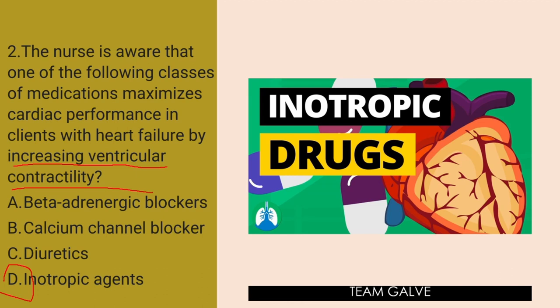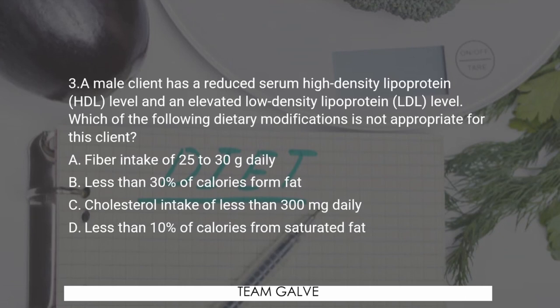Board exam question number three. A male client has a reduced serum high-density lipoprotein (HDL) level and an elevated low-density lipoprotein (LDL) level. When the HDL is low and the LDL level is high, which of the following dietary modifications is NOT appropriate for this client?